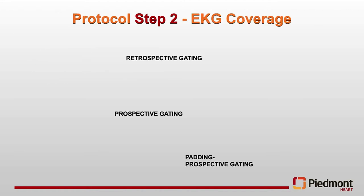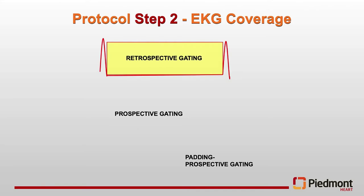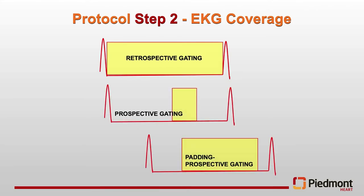Protocol step two for structural planning is retrospective gating, mostly with or without dose modulation, because we need both systolic and diastolic phases for planning. You need to understand how to tackle different complexities with arrhythmia, atrial fibrillation, PVCs, and how to reconstruct when you have irregular rhythm—phase reconstruction versus absolute reconstruction. With new generation scanners, the need for beta blockers has come down and acquisition is more streamlined.